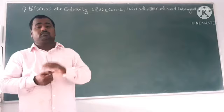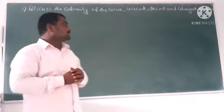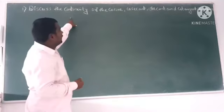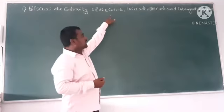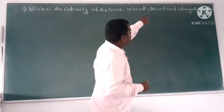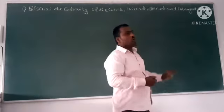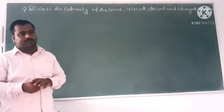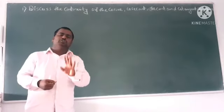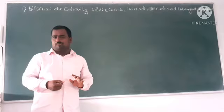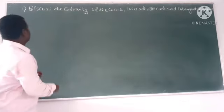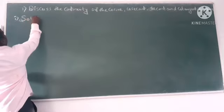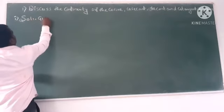Look at the question first. How are they asking the question? Let us discuss one by one. Discuss the continuity of the cosine, secant, and cotangent functions. Four trigonometric functions are only there. They are not asking for the two. So let us discuss one by one.